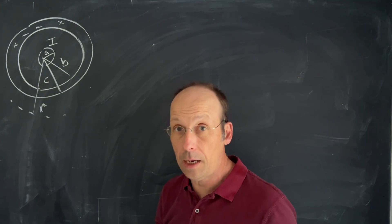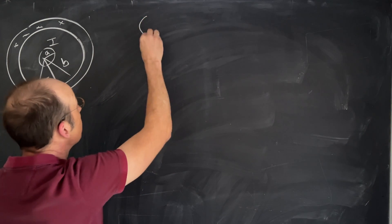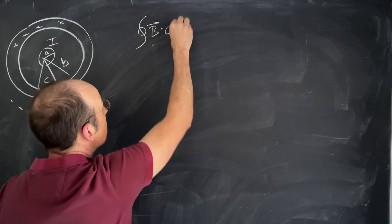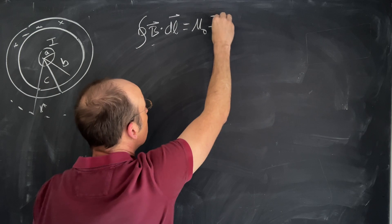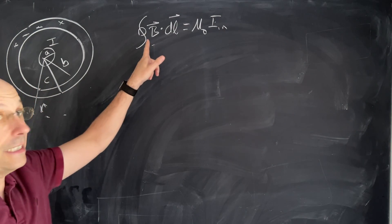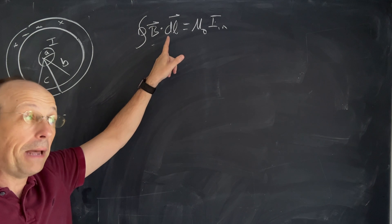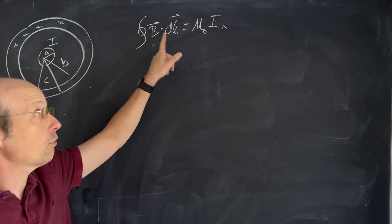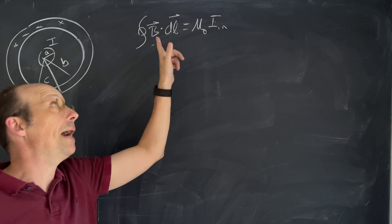So let's start with Ampere's law. I'm gonna write it down. This says that if you integrate the magnetic field around some closed path, then the product of that integral would be equal to the total current passing through the surface area bounded by that curve.